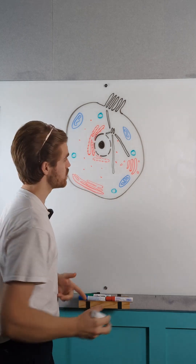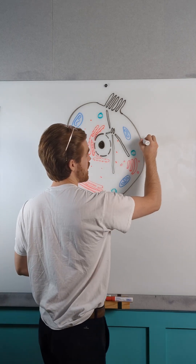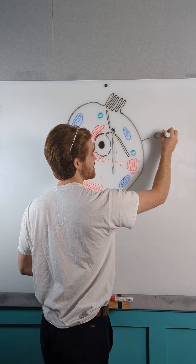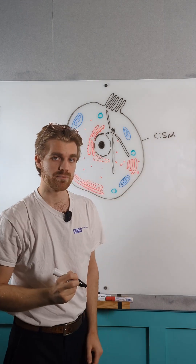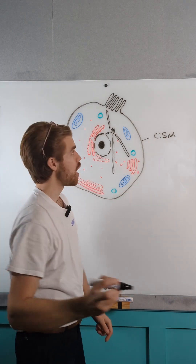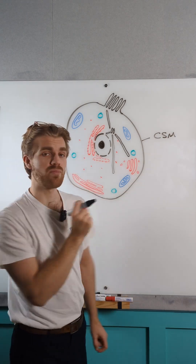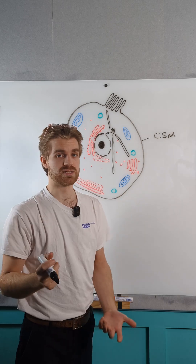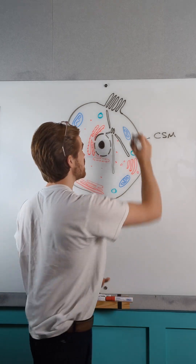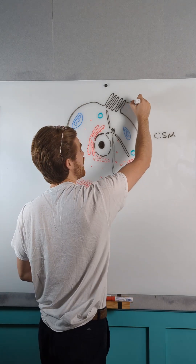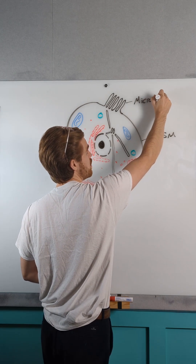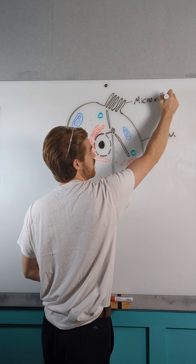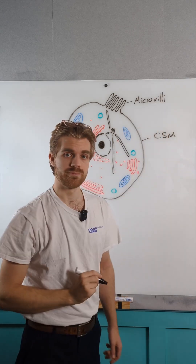We're going to start with the outside of the cell and that is our cell surface membrane. Our cell surface membrane might be folded in certain places like here and these would be our microvilli.